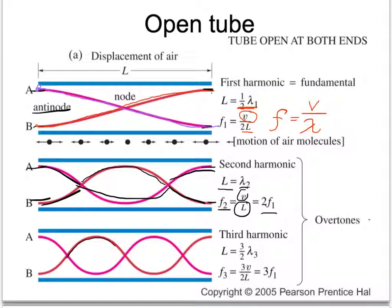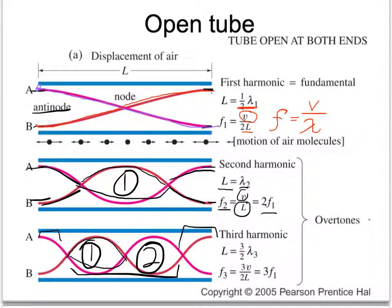For the third harmonic, we insert another football — two footballs total. We'll have one wavelength in the middle, plus a quarter wavelength on each side, adding a half. So now the length is one and a half wavelengths. Solving for the frequency, the third harmonic's frequency is three times the first harmonic. You're just solving the wave speed equation v equals lambda f for frequency in each case and seeing how much it changes from the first harmonic to the second to the third.